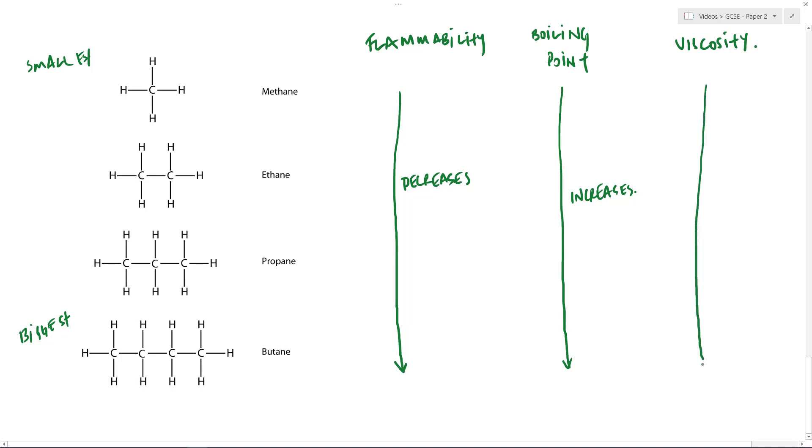And finally, viscosity. What does viscosity mean? Well, viscosity is how runny or how gloopy something is. So if something is very viscous, it's very thick, it's like oily, tarry, like honey. If something's not very viscous, it's very easy to flow, it's like water, for example.